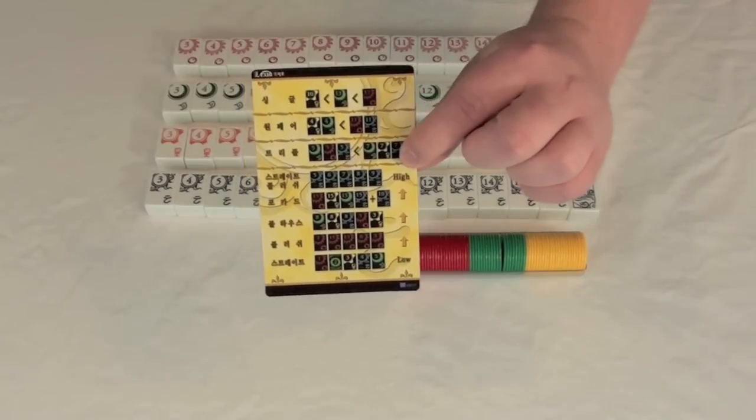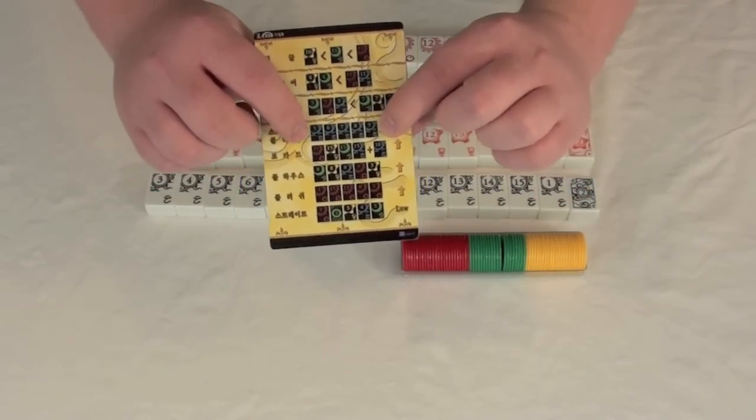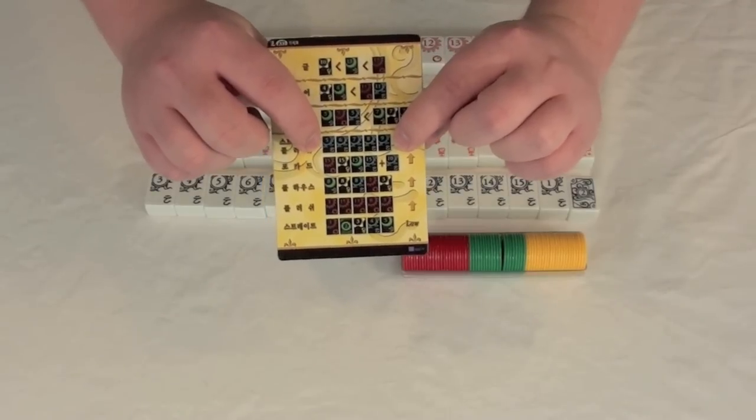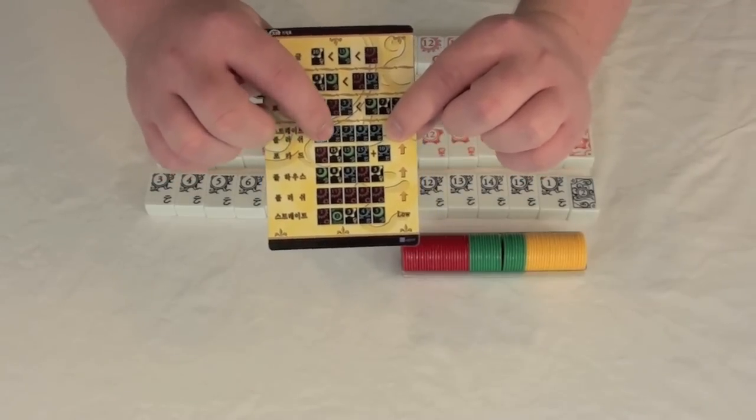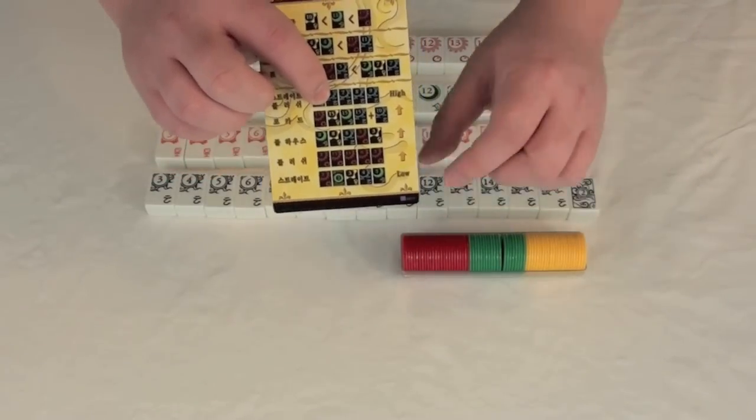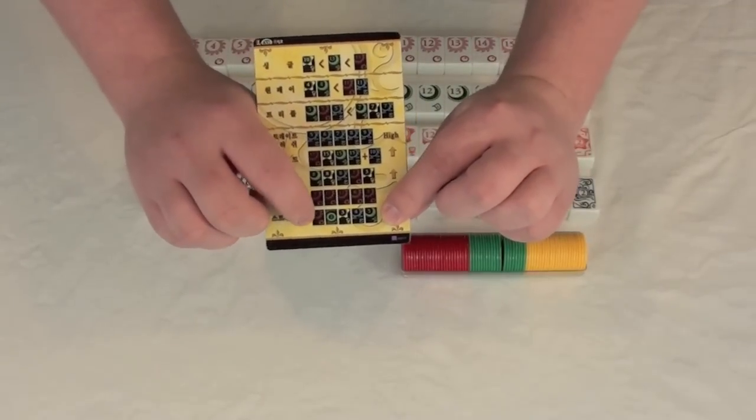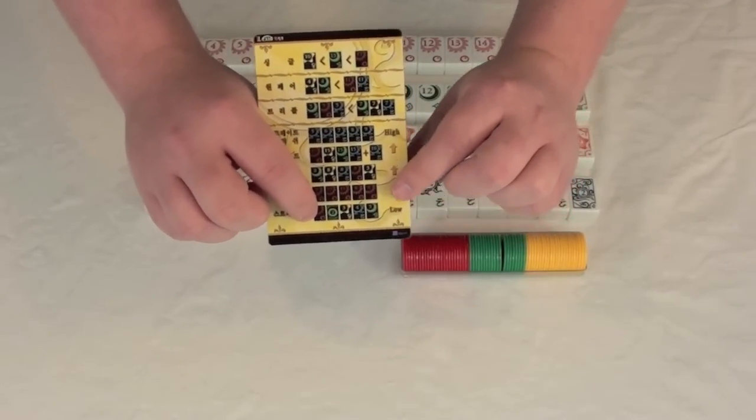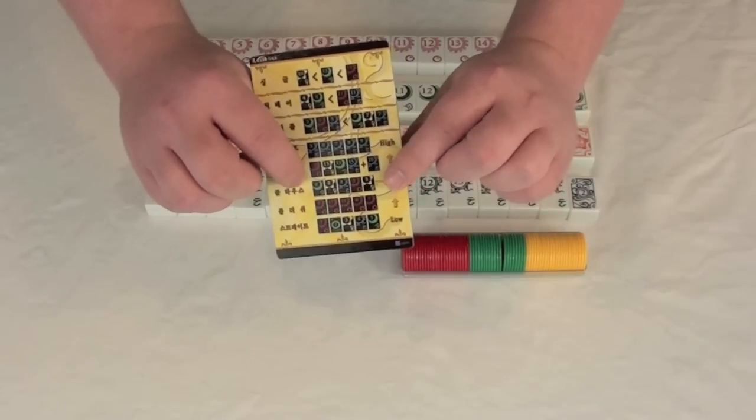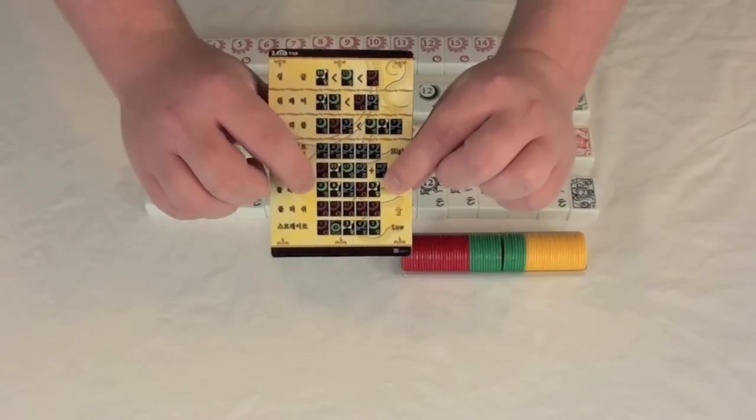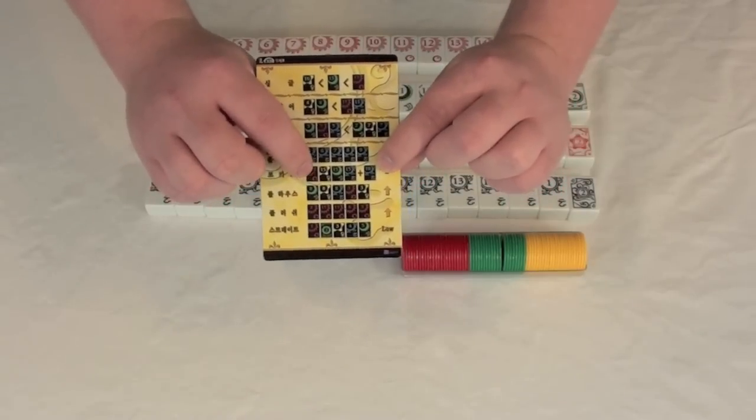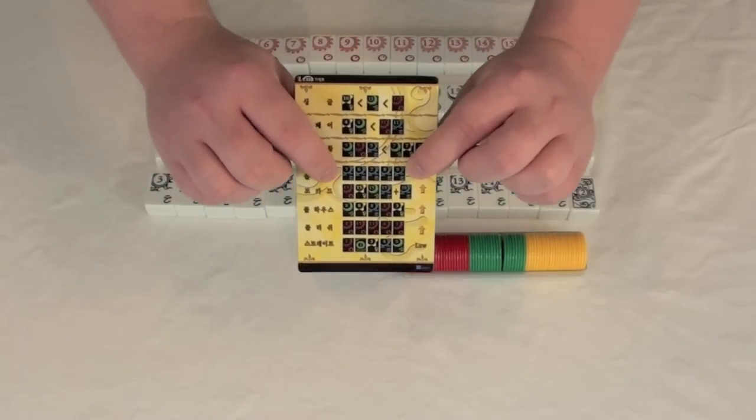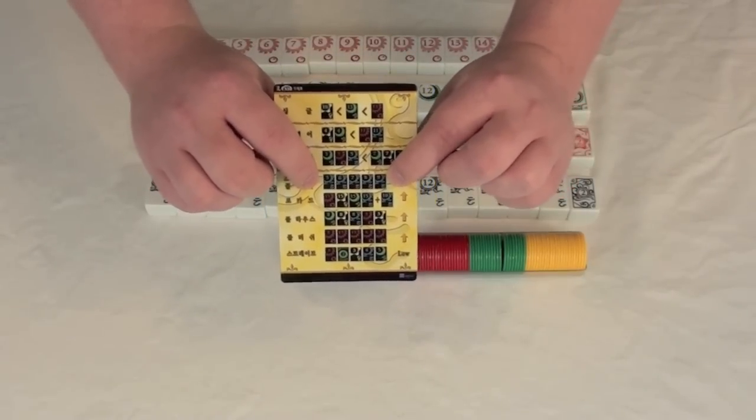You could play three of a kind, same rules, and then you could get into things like straight flushes. There's going to be low to high here. You could have just a straight of any amount of colors. You could have a flush of one color. You could have a full house. Or you could have a four of a kind plus any tile. And then finally, the highest combination, a straight flush.